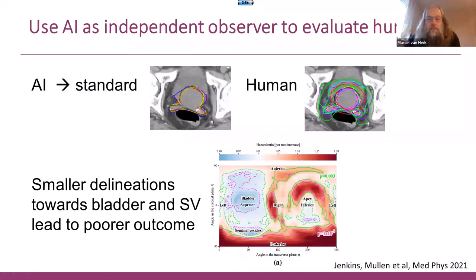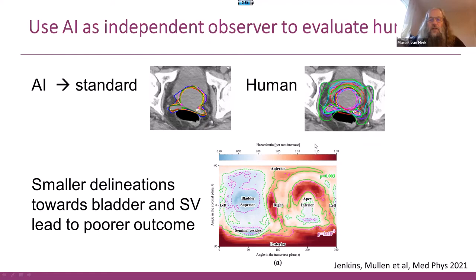Can you use AI in big data analysis as well? This is a publication from two of our PhD students this year. They used an AI to generate standardized contours of the target volume — in this case the prostate — and compared that with human observers. In a radial map, they looked at what happens to clinical outcome when the contour is bigger or smaller in a particular area around the target. They showed that increasing the delineation around the bladder and seminal vesicles gives a better outcome, correlated with a decrease of the target in other directions.